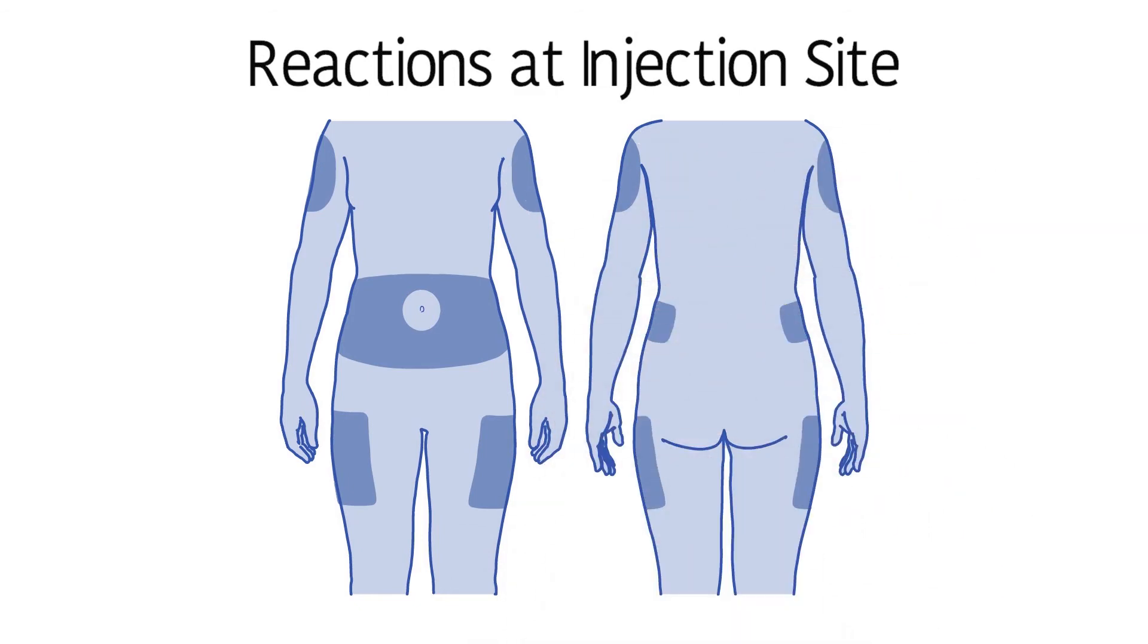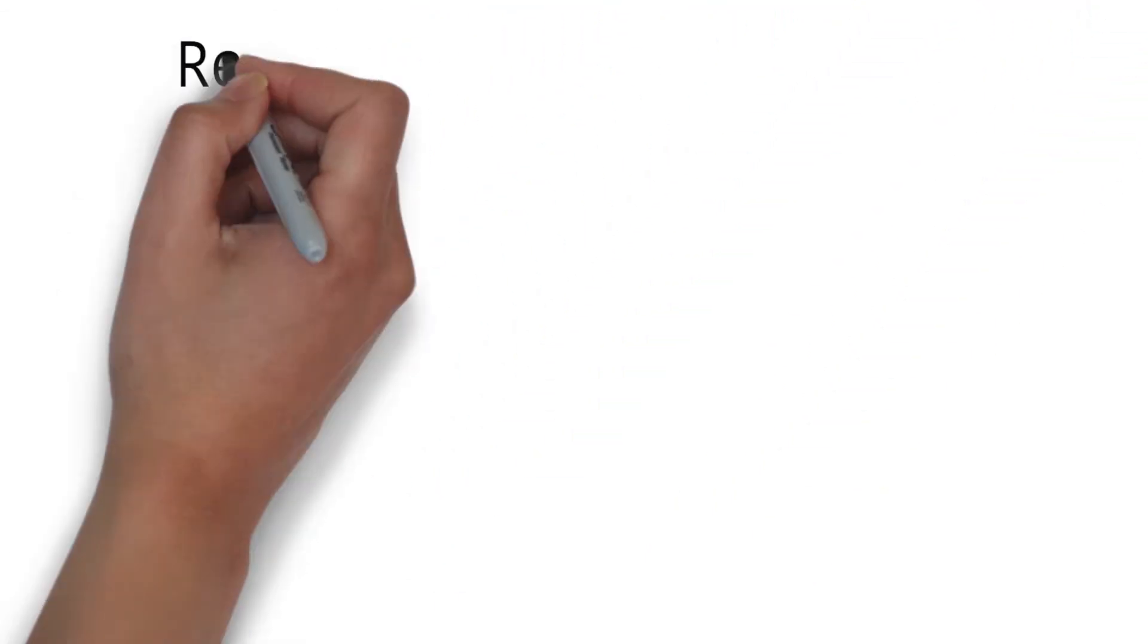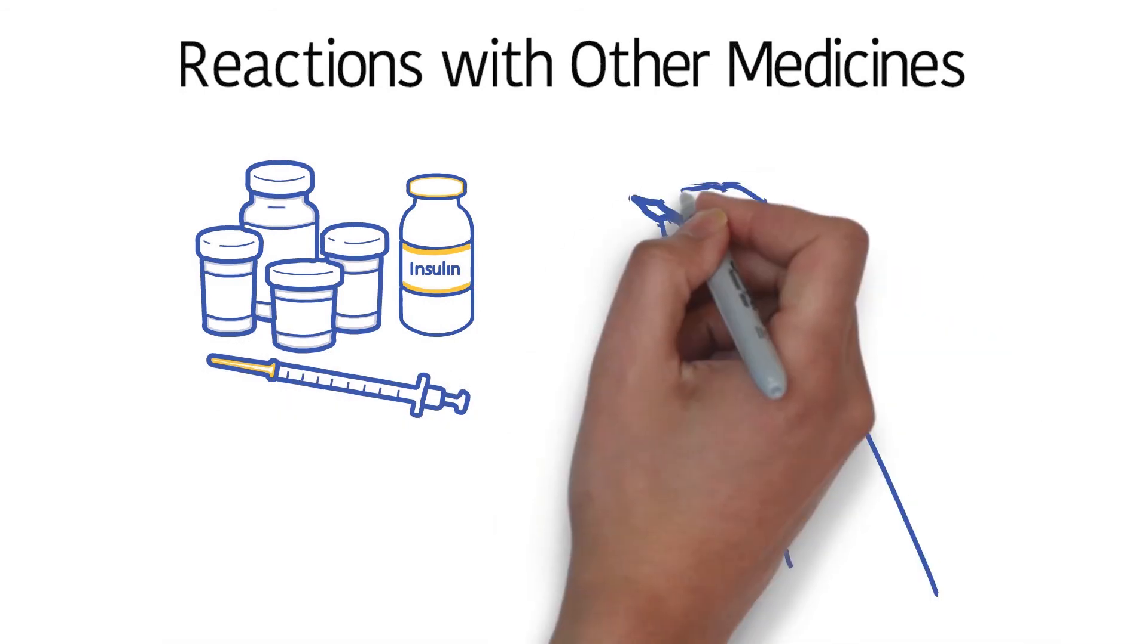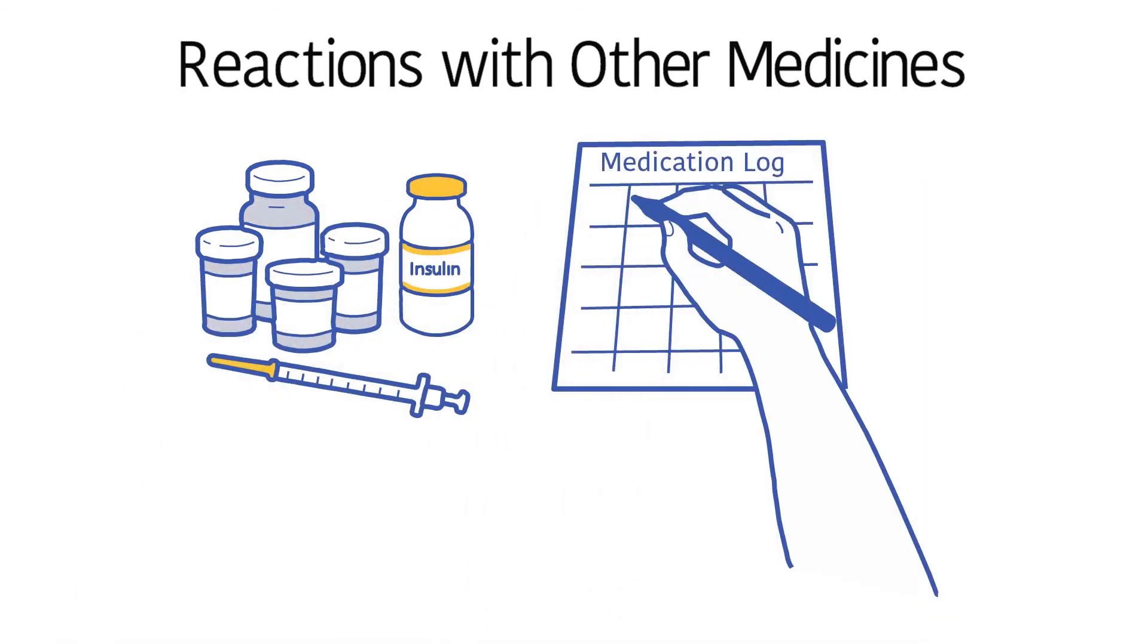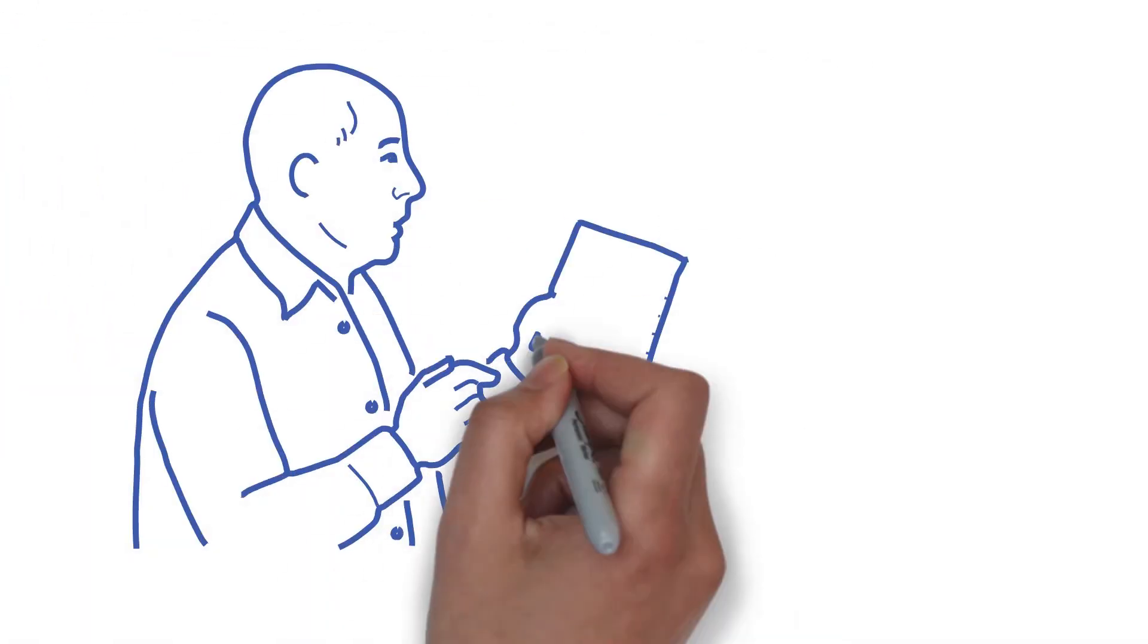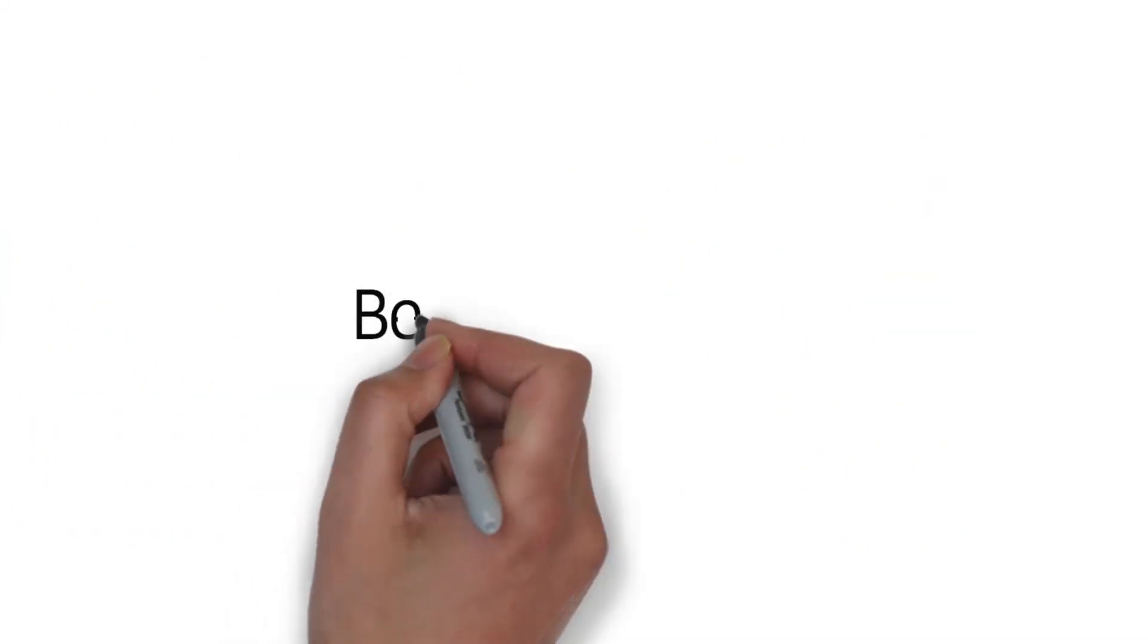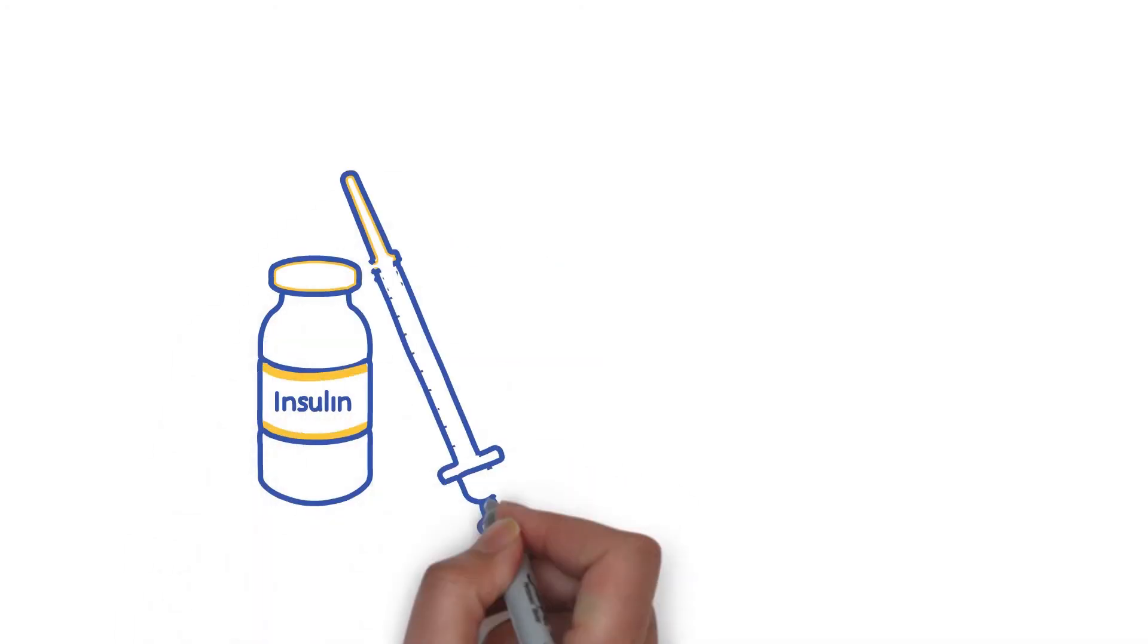Taking insulin with medicines for other conditions, like high blood pressure or heart disease, can affect how the medicines act. Make a list of all the medicines you take, then talk with your healthcare provider and make sure it's okay to be on your current regimen.